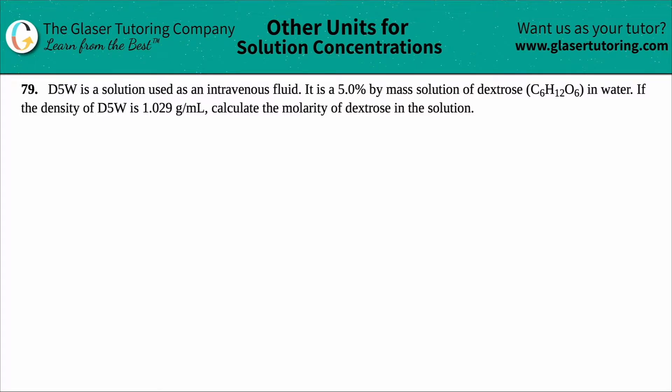Number 79. D5W is a solution used as an intravenous fluid - it's an IV fluid if someone goes to the hospital. It is a 5.0% by mass solution of dextrose, which is a sugar. Dextrose is basically glucose, C6H12O6, in water. If the density of D5W is 1.029 grams per milliliter, calculate the molarity of dextrose in the solution.